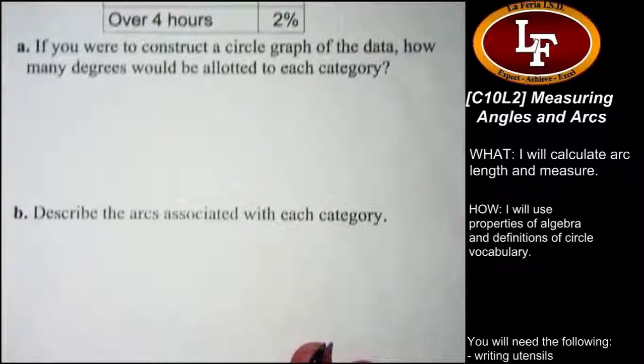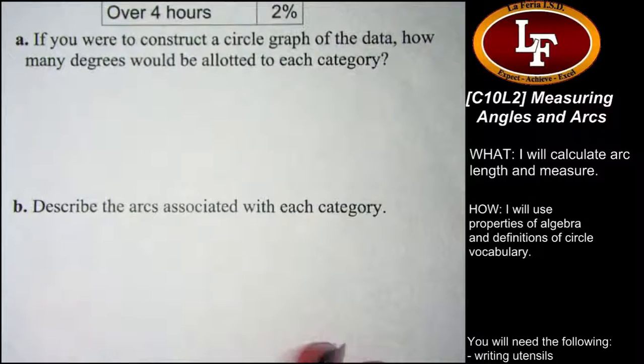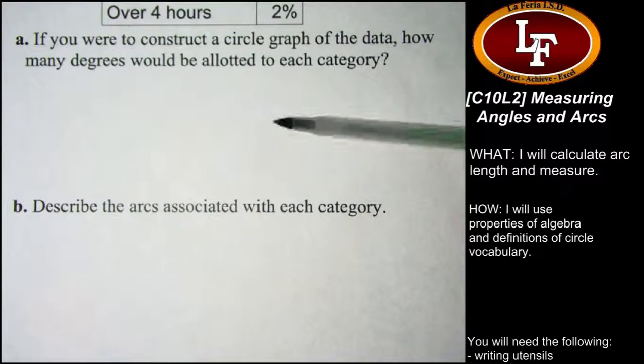The second half asks you to describe the arcs associated with each category. This means is it a minor arc, major arc, or semicircle? I recommend you sketch it out, or use the number of degrees. A minor arc is less than 180, a major arc is greater than 180, and a semicircle is exactly 180 degrees.